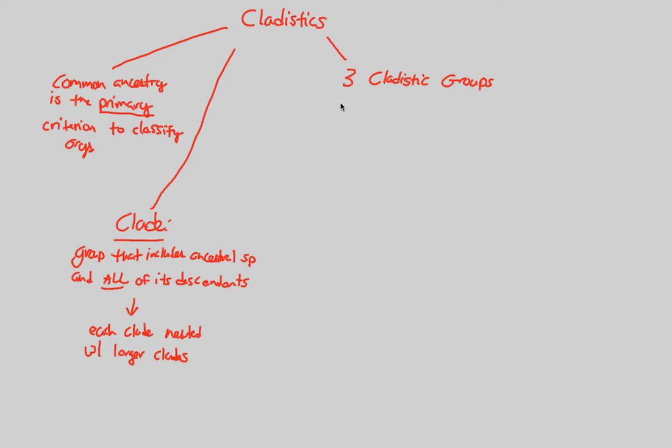Of the three cladistic groups, the most valuable, the most acceptable in terms of cladistic study is called a monophyletic group. This is the best cladistic group. In a monophyletic clade, it consists of an ancestral species—that common ancestor—and absolutely all descendants of that common ancestor.